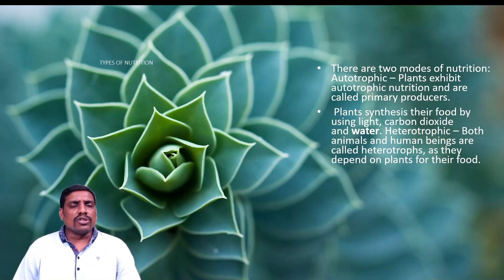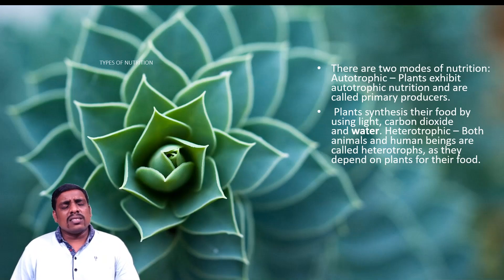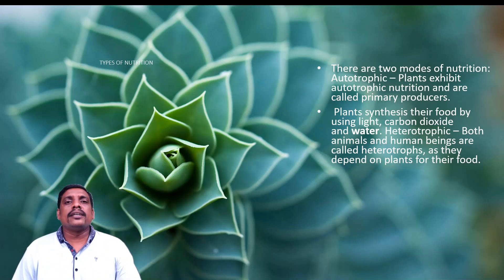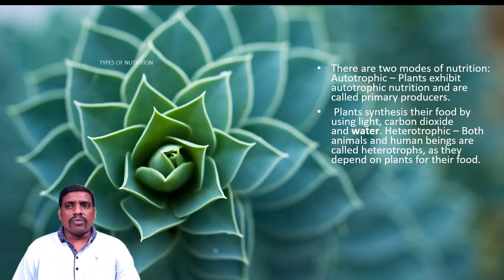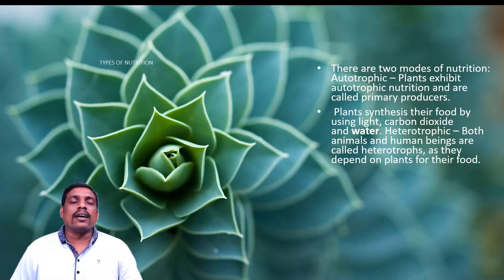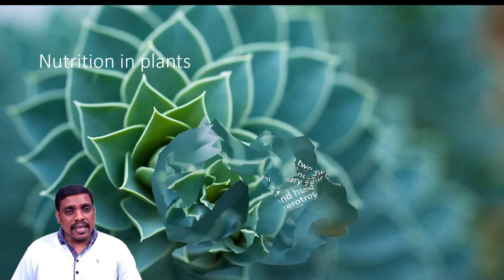There are two types of modes of nutrition found in plants: autotrophic nutrition and heterotrophic nutrition. Plants prepare their own food — starch or carbohydrates — by using sunlight and carbon dioxide in the presence of chlorophyll. Green plants, blue-green algae, and cyanobacteria are considered autotrophs as they can prepare their own food.